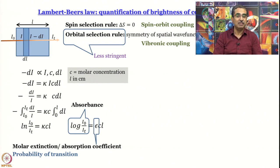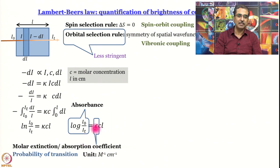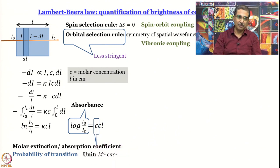Absorbance tells us how opaque or transparent the sample is at a particular wavelength. Epsilon depends on wavelength — that is why the spectrum is a plot of epsilon against wavelength or energy: some transitions are more probable, some are less probable. The unit of epsilon, from the expression, is per molar per centimeter. Absorbance has no unit — it is a logarithm of a ratio — so from εCL, since C has a unit and L has a unit, epsilon has a unit of per molar per centimeter.